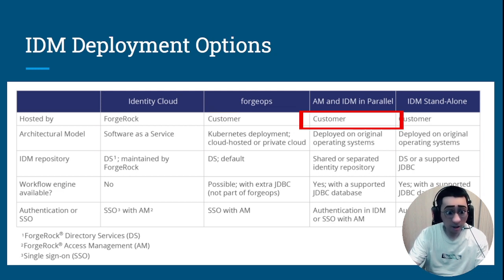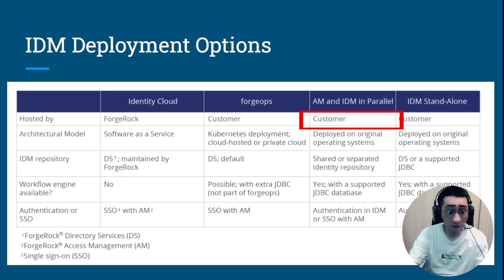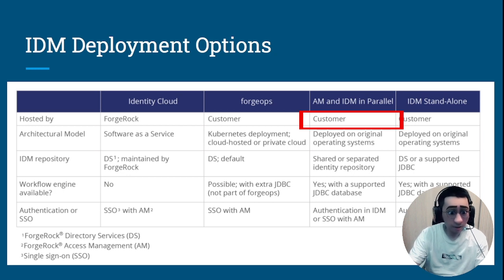For AM and IDM in parallel, if you are choosing that kind of deployment, it will have to use a direct LDAP directory server, and it would have to be a ForgeWalk one because AM requires a shared identity store. IDM and AM can be tightly integrated sharing the same repository — that is what it means by them being in parallel.